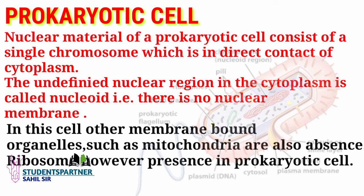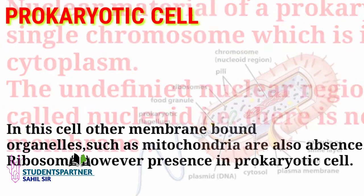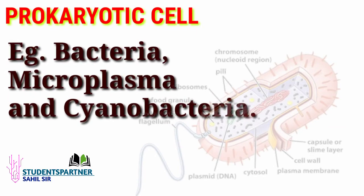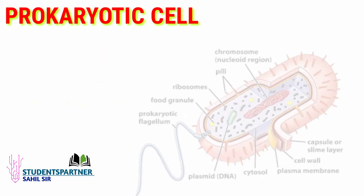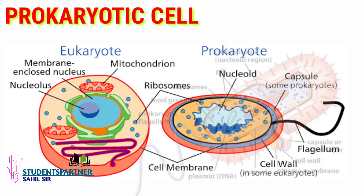Ribosomes are present in prokaryotic cells. The type of ribosomes found here are 70S type — not 80S type. 80S ribosomes are found in eukaryotic cells, while 70S are found in prokaryotic cells. 70S is less powerful compared to 80S. Both cell types have some common features — both have cilia and flagella, and DNA is also found in prokaryotic cells.